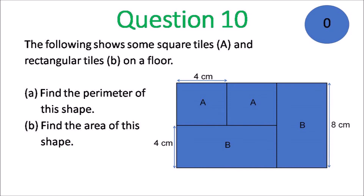Question 10. The following shows some square tiles A and rectangular tiles B on the floor. A, find the perimeter of the shape. B, find the area of the shape.